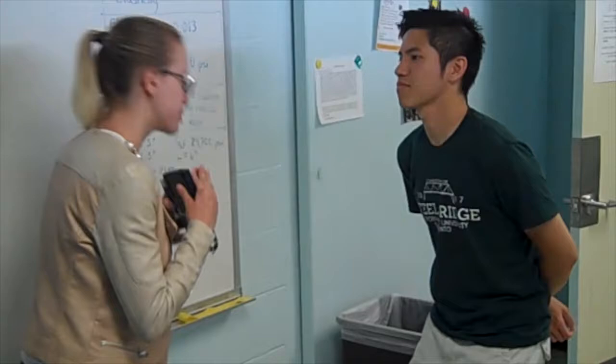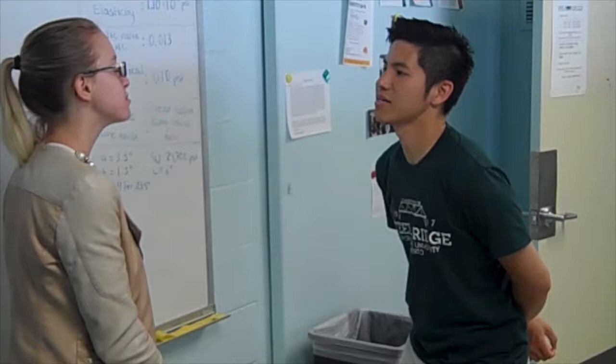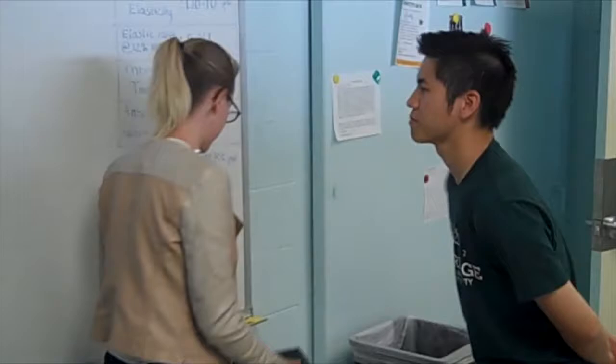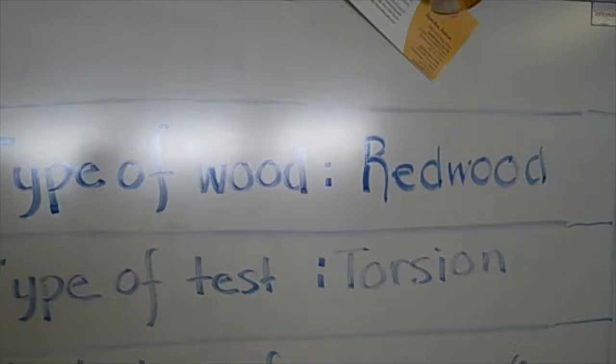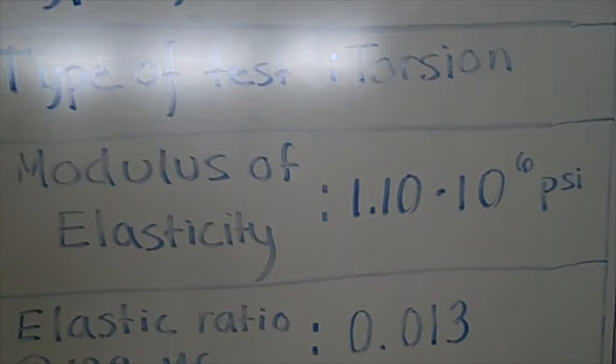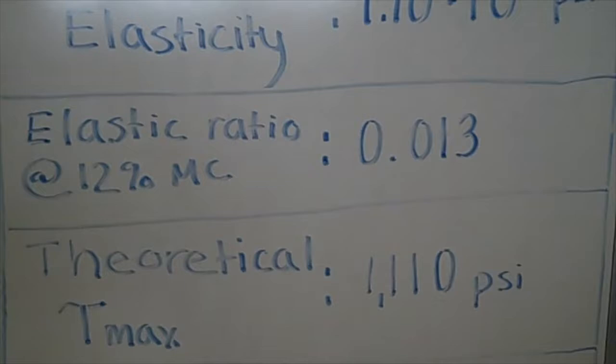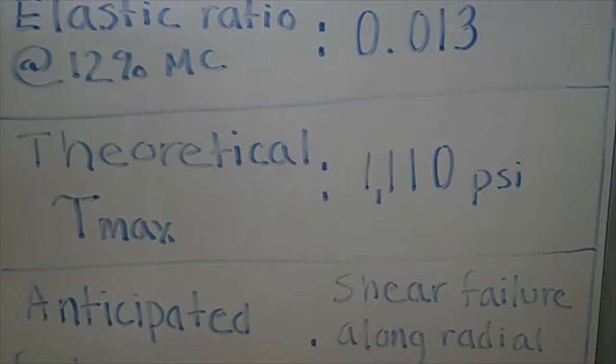Oh, Mr. Miyagi. Hello. So I have some information on Tony Timber. It turns out he has Redwood 254 as arms. Ah, that's interesting. My students and I just recently did a project on Redwood, and we were testing it in torsion. We found that the modulus of elasticity was 1.10 times 10 to the 6 pounds per square inch. The elastic ratio at 12% moisture content was 0.013.